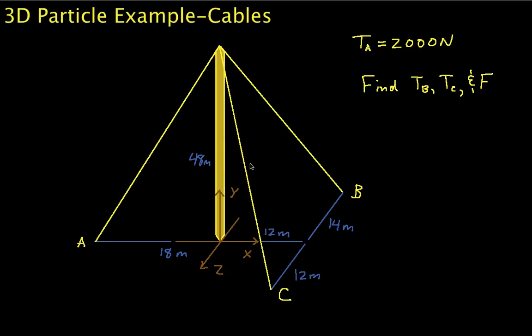Welcome to this video. In this video, we will do a 3D example of analyzing a particle that is connected to cables to find tension in the cables and to find force that is exerted by a tower to keep the cables tight. The picture we have here is a schematic representation of a tower. It's 48 meters tall, and it has three cables that are attached to the top, and the cables are keeping it upright.